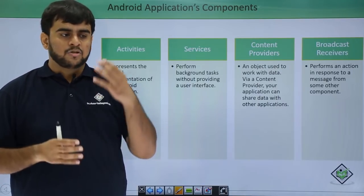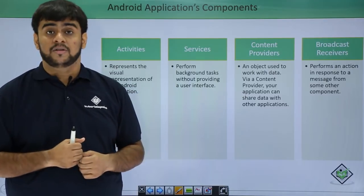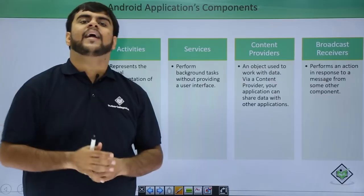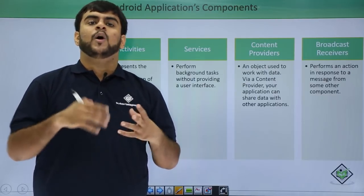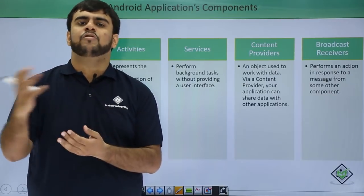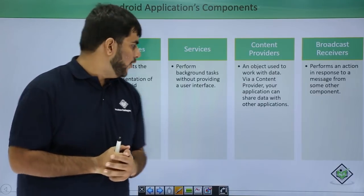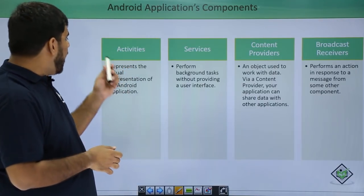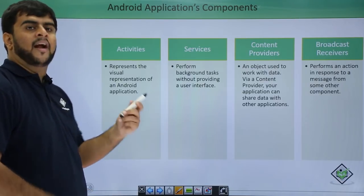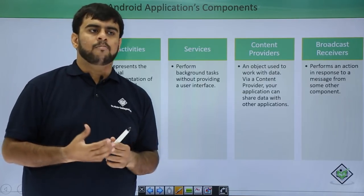The Android calls the Activity, that Activity then calls the entire process, which then calls the UI. So we can say that one Activity can have only one user screen. As soon as the Activity is turned off or there is some other process coming up, the Activity goes to the background or it can even close. So to say, Activity is nothing but a visual representation of an Android application.